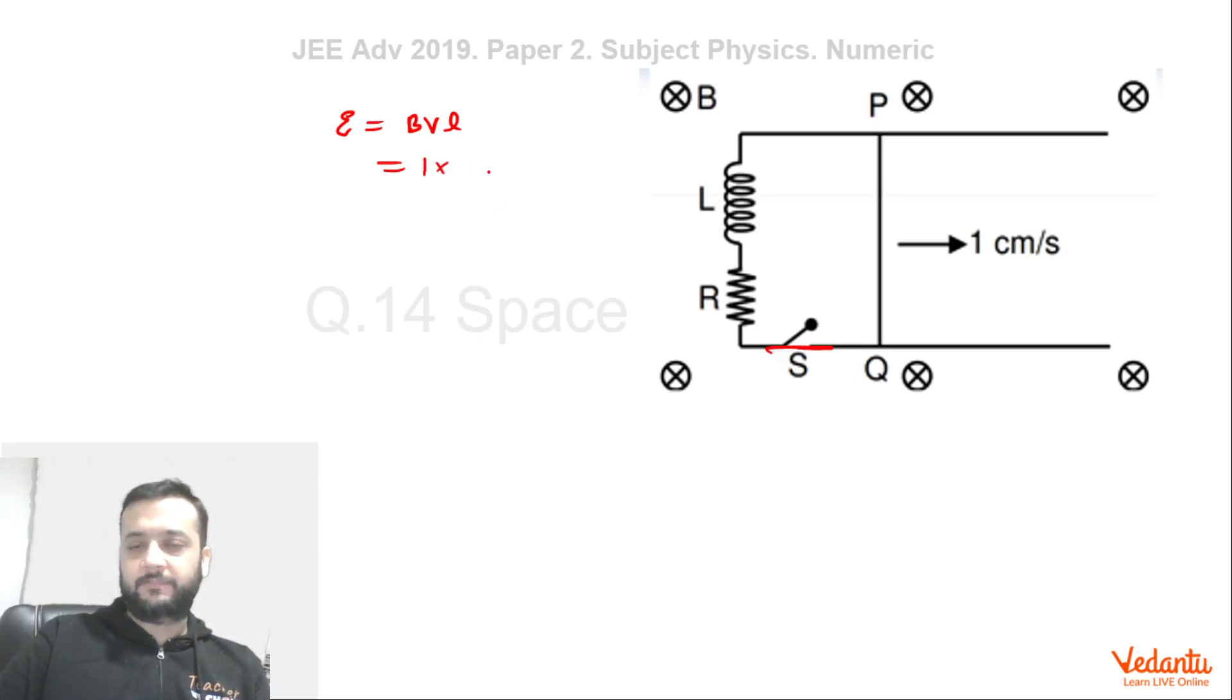So magnetic field is 1 tesla, velocity is 0.01 in meters per second, and length of the rod given was 10 centimeters which will again become 0.1. That means the induced EMF will be 10 to the power minus 3.